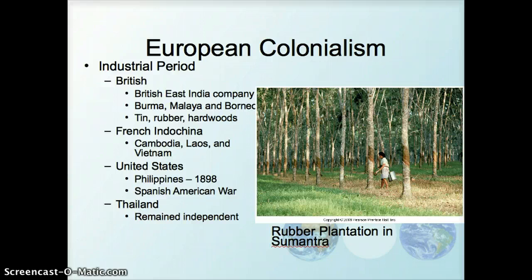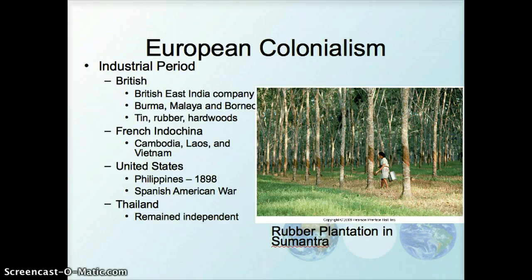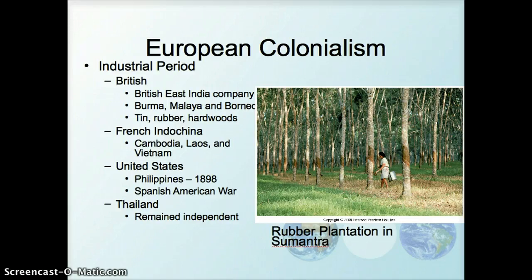Some of the major colonial players during the industrial revolution in Europe were Britain, with the British East India Company expanding and especially interested in rubber plantations, tin, and hardwoods. In Indochina, France had holdings in Cambodia, Laos, and Vietnam. The United States later became interested, acquiring the Philippines after the Spanish-American War, while Thailand remained independent. The U.S. also became involved in the 1960s as the French left Vietnam and conflict arose between communist North Vietnam and southern Vietnam.